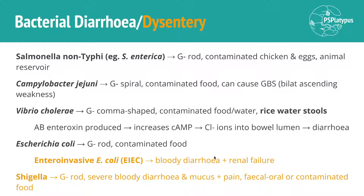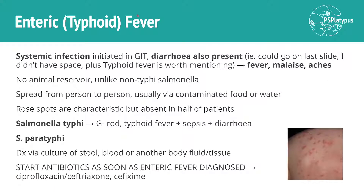Looking at typhoid fever — it's a systemic infection that starts in the gastrointestinal tract, and diarrhea is also present. Because it's a systemic infection, we'll also see systemic infective symptoms: fever, malaise, discomfort, and aches. There's no animal reservoir — it's spread from person to person via contaminated food or water. Rose spots are characteristic, but you only see them in about half of patients. The two main organisms are Salmonella typhi and Salmonella paratyphi, causing typhoid and paratyphoid fever.